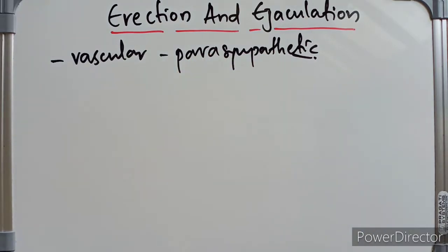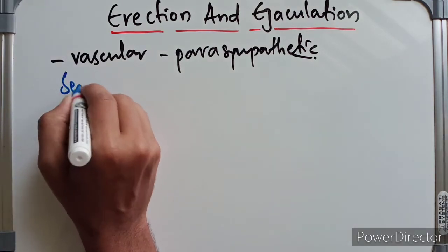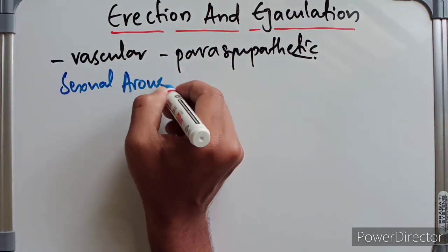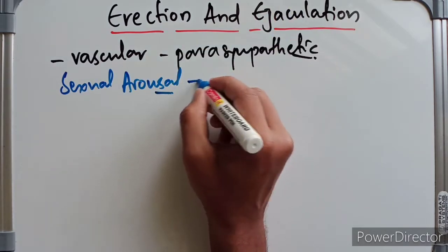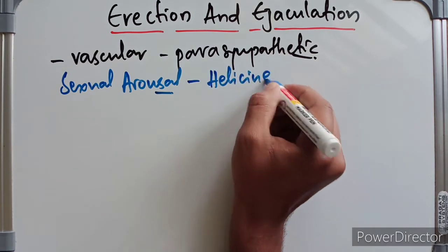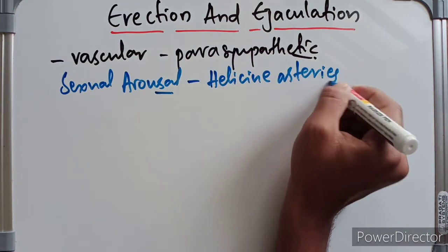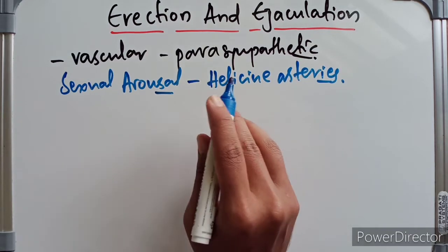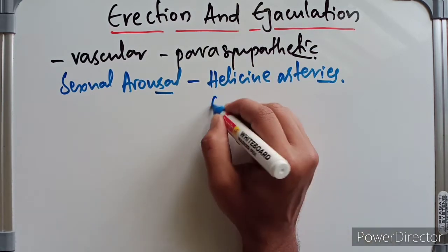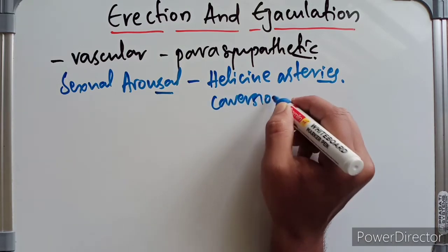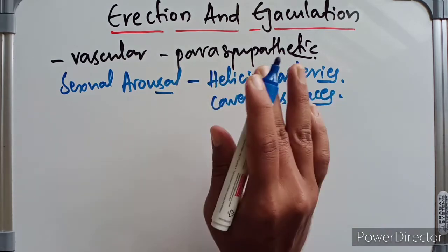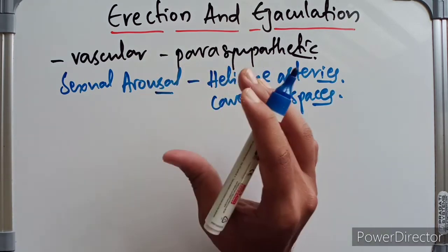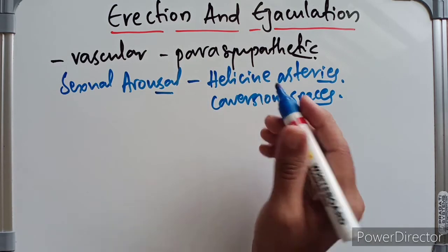Sexual arousal leads to rapid inflow of blood to the helicine arteries. The blood comes to the helicine arteries and into the cavernous spaces of the erectile tissue. The filling of blood in the cavernous spaces leads to compression of the veins which drain the erectile tissue.